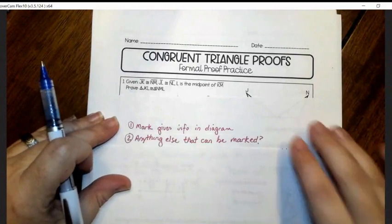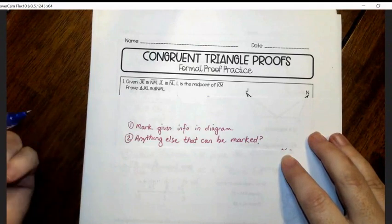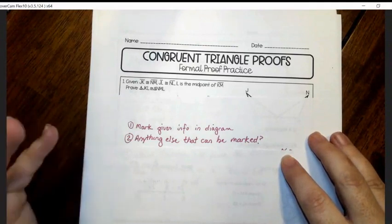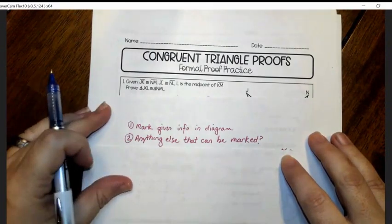Step two is to ask yourself is there anything else that can be marked? Is there any vertical angles? Is there anywhere where the reflexive property can be used? Because the two triangles share a side or an angle.